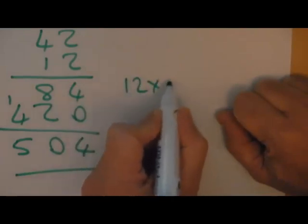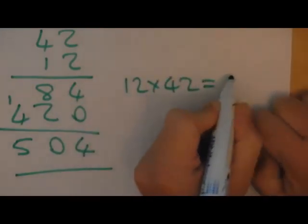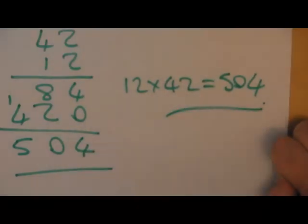4, we get a 10, carry that over, 1 plus 4 gives us 5, so 12 times 42 is 504.